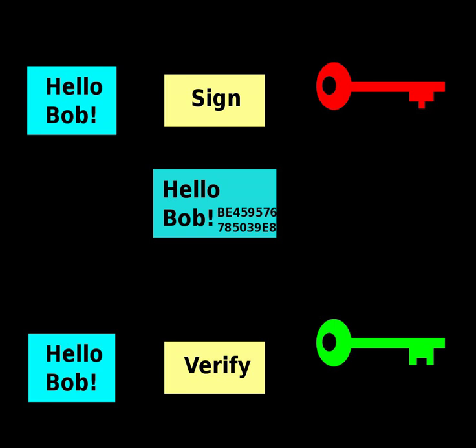In many scenarios, the sender and receiver of a message may have a need for confidence that the message has not been altered during transmission. Although encryption hides the contents of a message, it may be possible to change an encrypted message without understanding it. Some encryption algorithms, known as non-malleable ones, prevent this, but others do not. However, if a message is digitally signed, any change in the message after signature invalidates the signature.